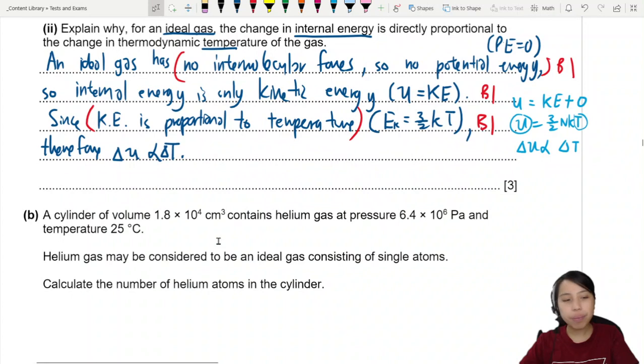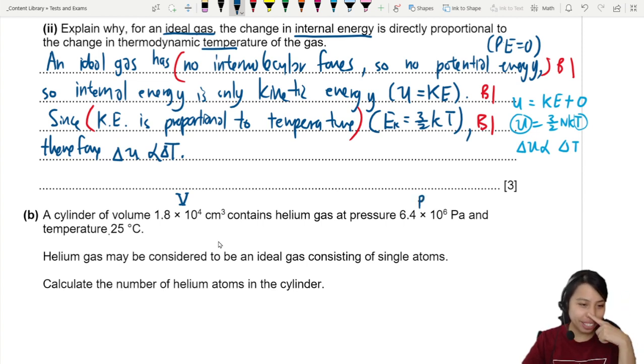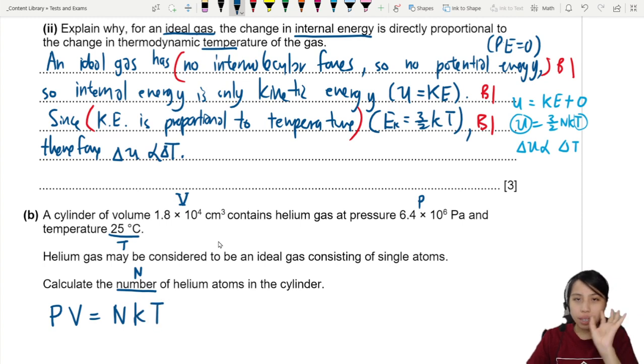Next is a calculation. A cylinder of certain volume contains helium at certain pressure and temperature. Helium may be considered to be ideal gas consisting of single atoms. Calculate the number of helium atoms in the cylinder. P, V, N, K, T.